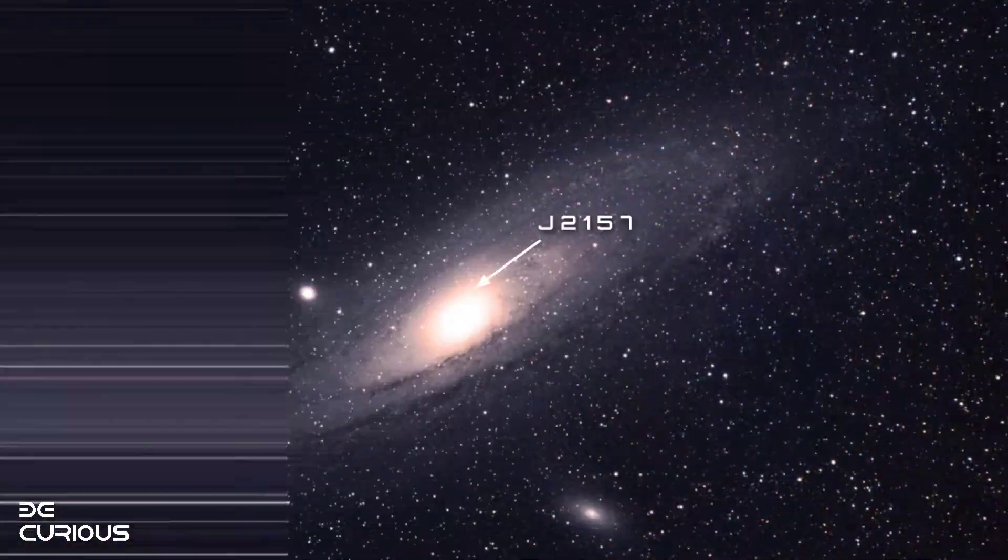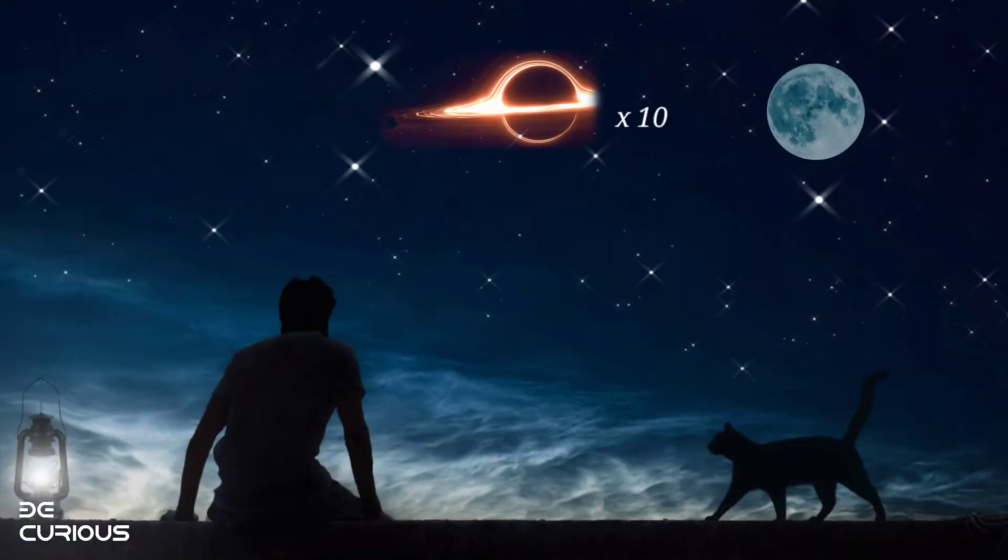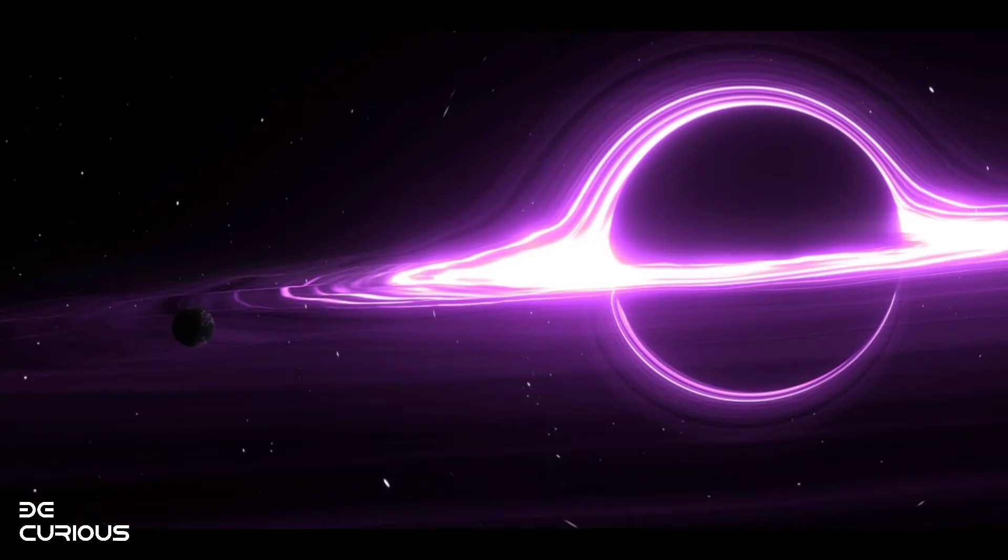If this black hole was at the center of the Milky Way, it would appear in Earth's skies ten times brighter than a full moon, and it would make life nearly impossible on Earth with the huge amounts of X-rays that emanate from this massive black hole.